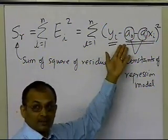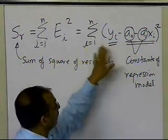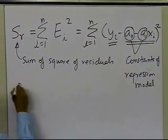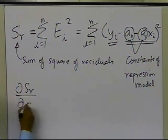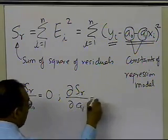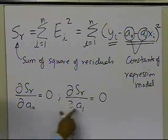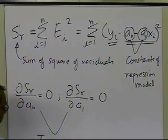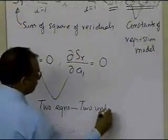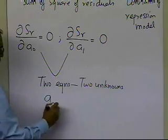To minimize this expression, we take derivatives with respect to a0 and a1 and set those equal to 0, going back to differential calculus. We take the derivative of SR with respect to a0, set it equal to 0, then take the derivative of SR with respect to a1, and set that equal to 0. Once we do that, we get two equations and two unknowns, and from those we can find what a0 and a1 are.